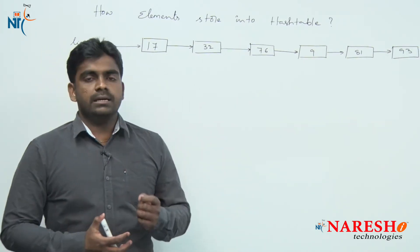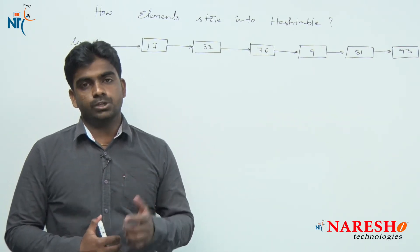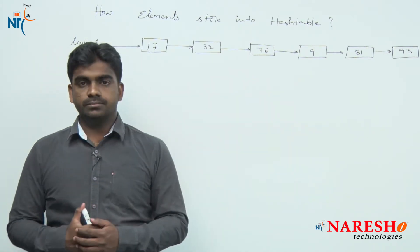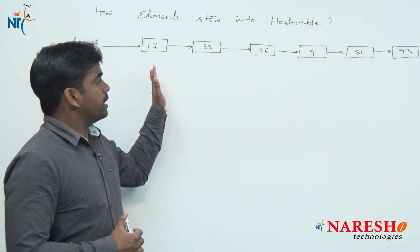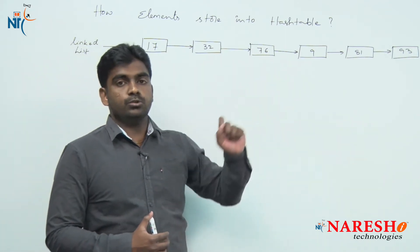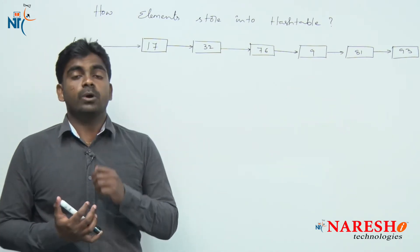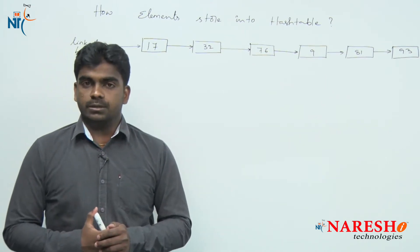What are the disadvantages of linked list? The main disadvantage is accessing becomes very slow, because there is no index to access, and we should travel from one location to another location to process a particular element in the list. To avoid that problem, they introduce the concept of a hash table.